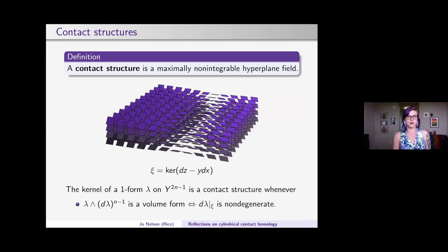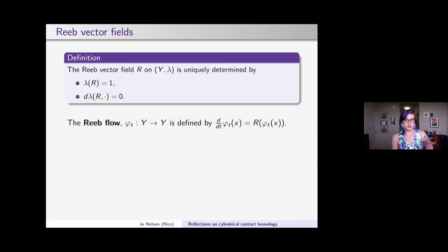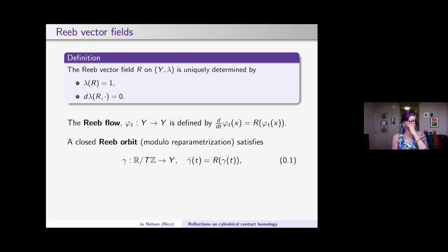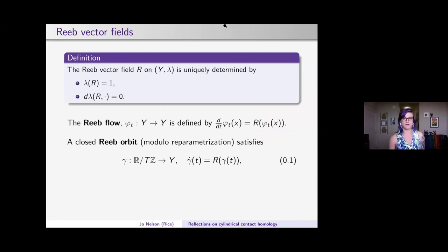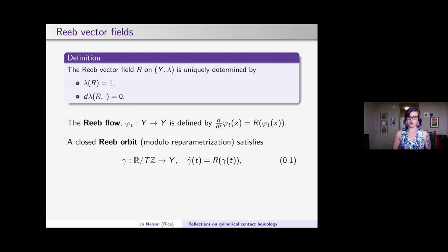Setting some notation: the Reeb flow is defined so the time derivative equals R of the flow. We're concerned with closed Reeb orbits — we don't care about a parameterization, just their image inside the contact manifold. So that's a map from R mod tZ, where t is the positive period of the orbit, with gamma dot equal to R of gamma.